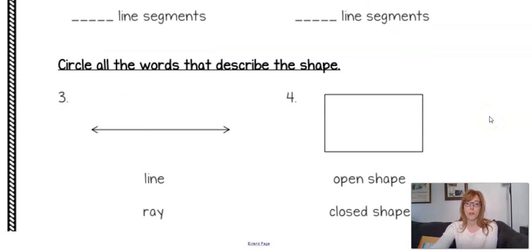So another review for chapter 12 lesson one was to circle all the words that describe the shape. Now remember a ray has a dot on the end and then it has a line with an arrow. So I told you to think about the dot as like the sun and this would be a ray of light coming out of the sun.